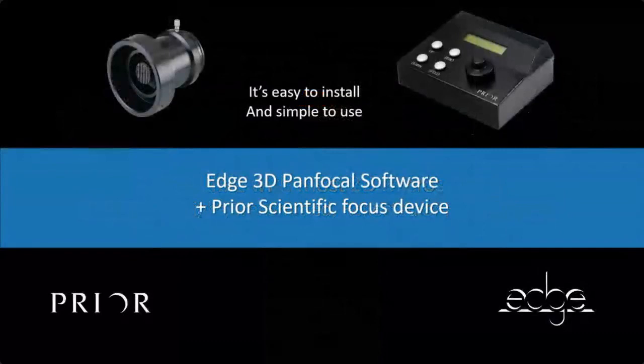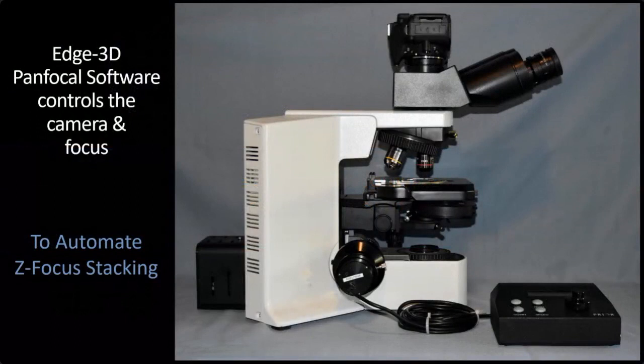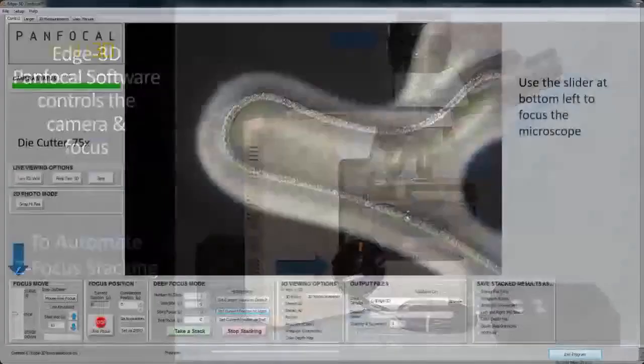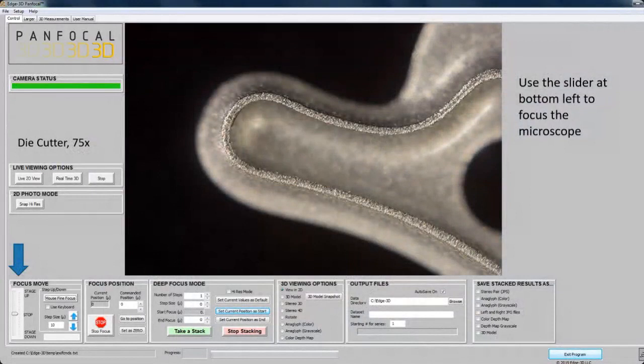Most 3D microscopes — as long as you have a focus knob — can be attached to a Prior focus device and a camera. It's easy to install and simple to use. It essentially consists of the EDGE 3D Panfocal software and the Prior Scientific focus device that hooks up to the focus knob on your 2D microscope. The EDGE Panfocal software controls the camera and the focus to automate Z-focus stacking, so instead of taking just one picture, it takes multiple pictures.